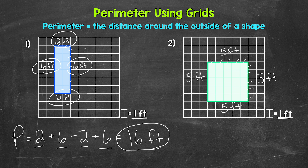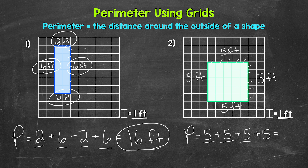So this is five feet as well. It looks like we are working with a square here — all of the sides are the same. So let's add these four sides up to find the perimeter. Perimeter equals five plus five plus five plus five. Five plus five is ten, plus five is fifteen, plus five is 20 feet. And that is our perimeter for number two — the distance around the outside of that square.